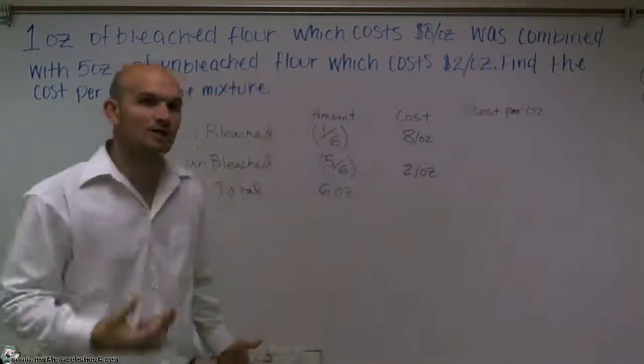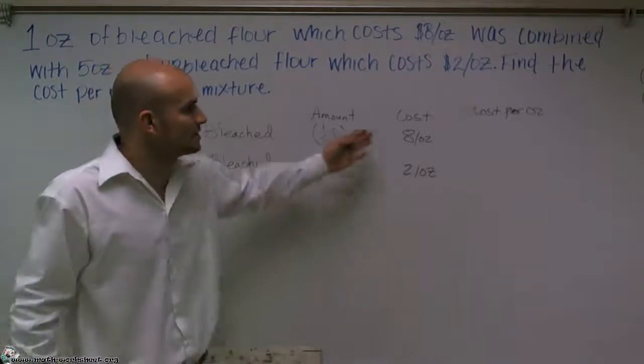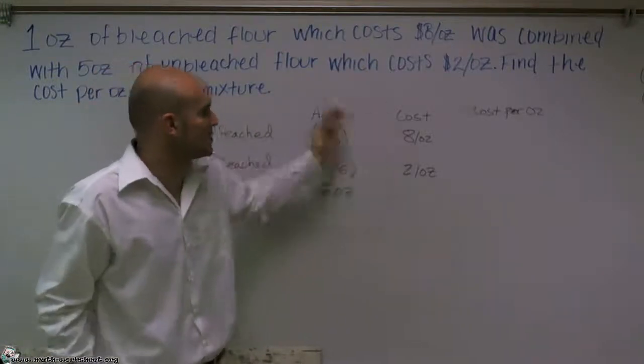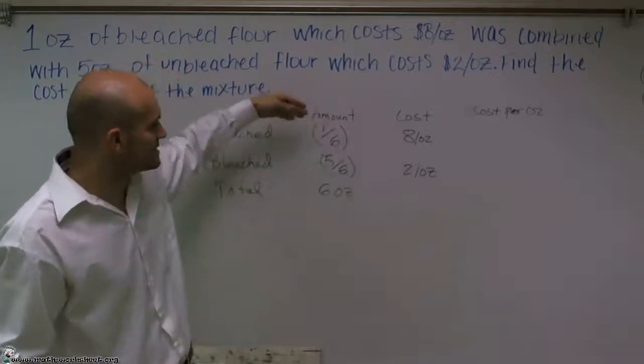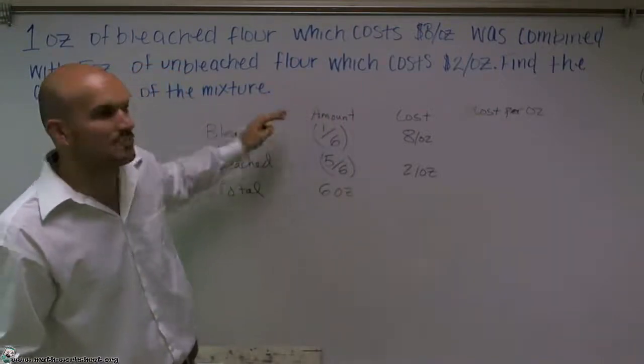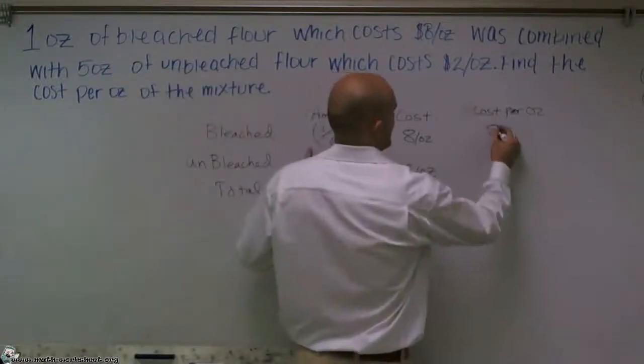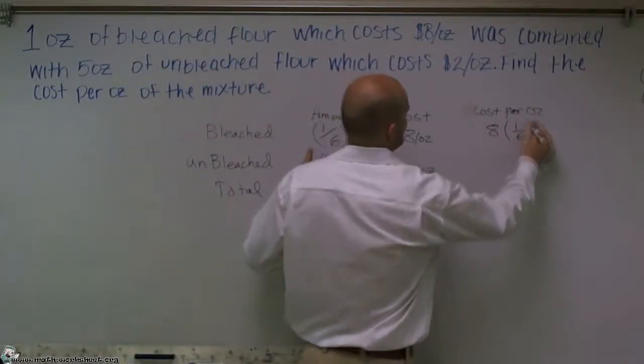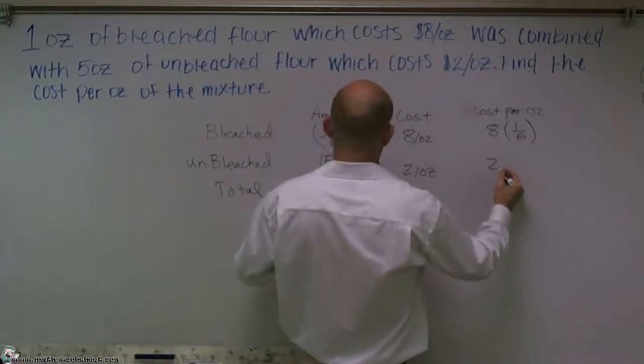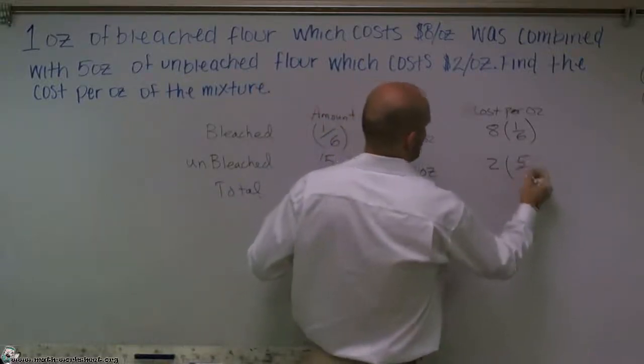So if I'm going to look at the cost, what I'm going to do is I'm going to represent the cost per ounce. Well I have one-sixth of my ounce as part of bleached. So all I'm simply going to do is multiply eight times one-sixth, and I'm going to do the same thing over here, two times five-sixths.